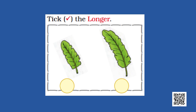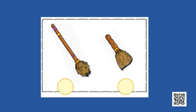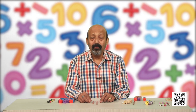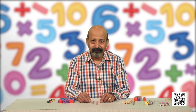There are many other objects. Like these two feathers — now you are able to see these two objects on the screen. Can you tell me which one is longer? The one which is ticked is longer and the other one is shorter. In these two brooms, can you tell me which one is longer? The one which has a longer stick is a longer broom, and the other one is a shorter broom.